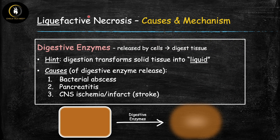The main underlying problem with liquefactive necrosis is the release of digestive enzymes. These are released by cells and they end up digesting the tissue. There's a helpful hint here: digestion causes breakdown of solids into liquids — liquefaction — causing liquefactive necrosis. So tissue digestion by these digestive enzymes causes formation of liquids from solids, and that's why it's called liquefactive necrosis.